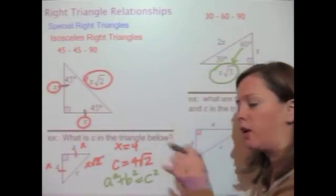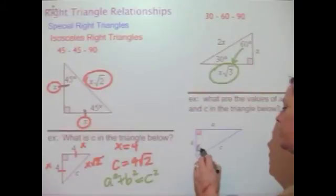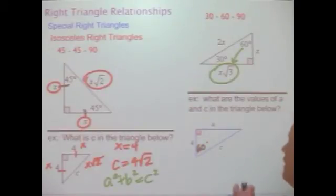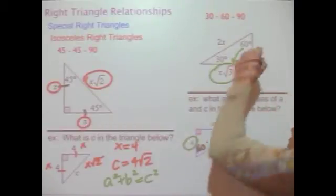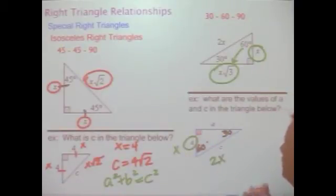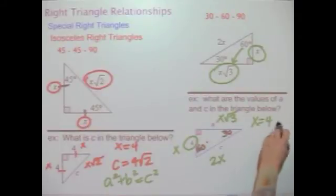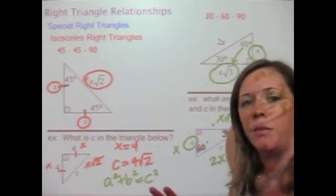Let's look at an example: what are the values of a and c? We need to note the 60-degree angle — without it we can't assume it's a 30-60-90 triangle. So if that's 60, this must be 30. The side of length 4 is across from the 30 degrees, so it's x. The hypotenuse c is 2x, and the longer leg a is x√3. Since x equals 4, a equals 4√3 and c equals 2 times 4, which is 8.